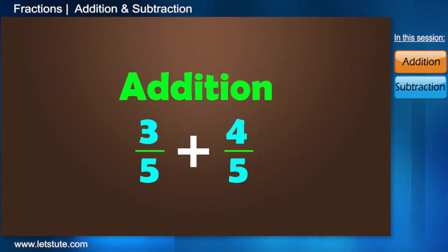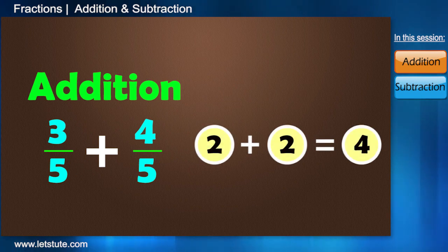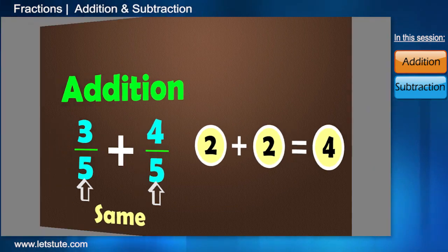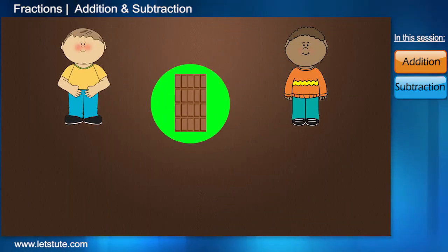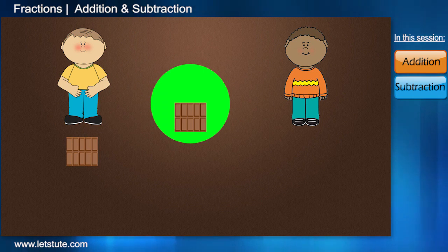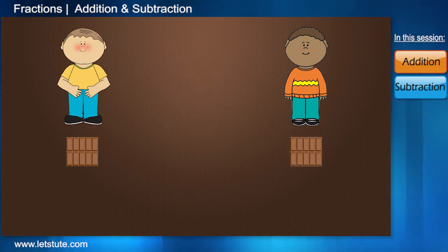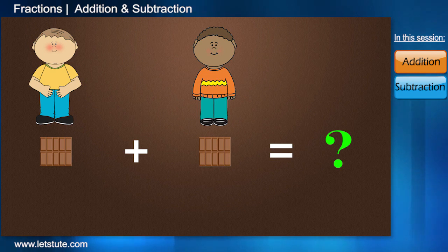Adding two fractions is very simple. It is just as similar as adding two whole numbers if the denominators are same. Let's start with one of the easiest examples. There are two friends, one ate half chocolate and the other ate half. So, what is the total chocolate that they had?